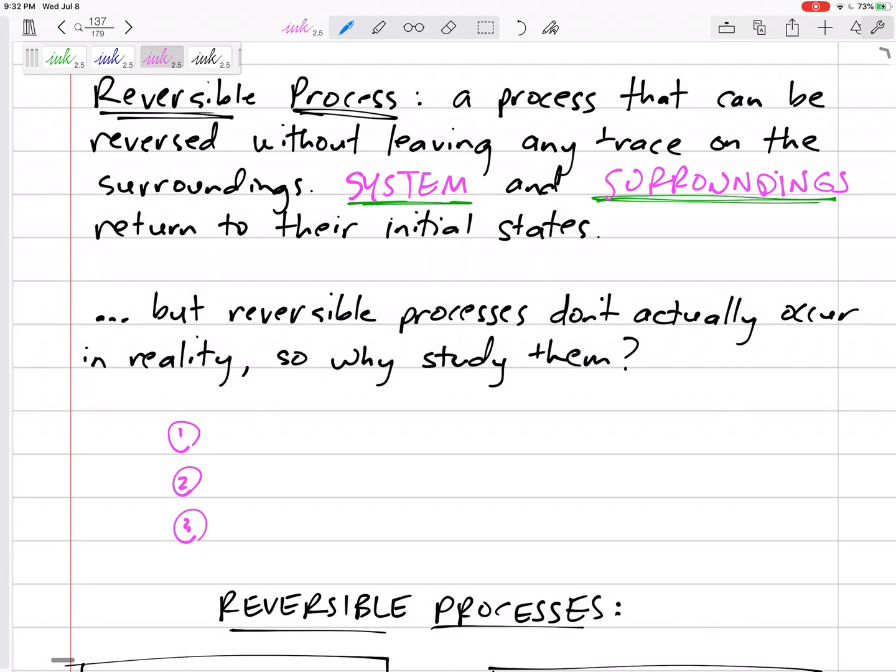A few reasons. That's kind of our goal, that's what we're aiming towards. We're seeing who can get the closest. We know nobody's going to get there, but who can and how close can we get? Also, they're easy to analyze. Sometimes the math and equations are easier for reversible processes, and so we can compare our actual process to the reversible process.